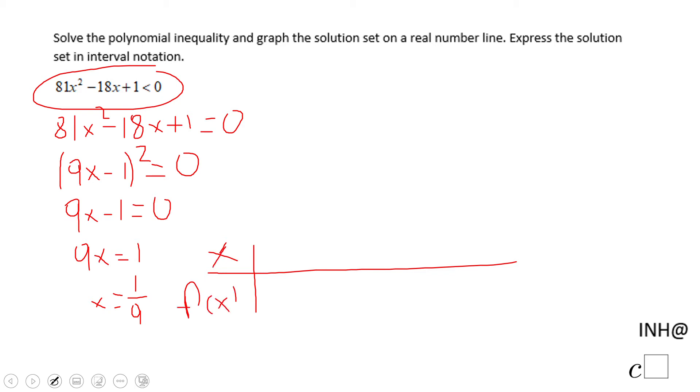And we have two intervals here. So only at x equals 1 over 9 the function is zero. And like I said, we have two intervals: left of 1 over 9 and right of 1 over 9.